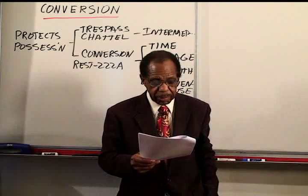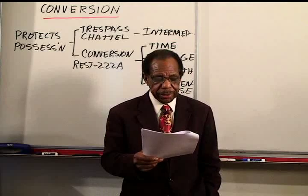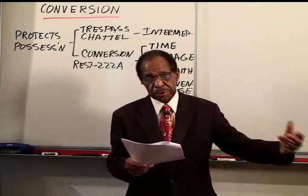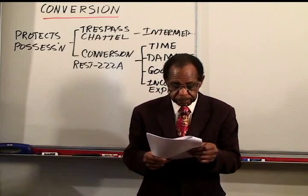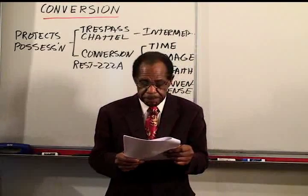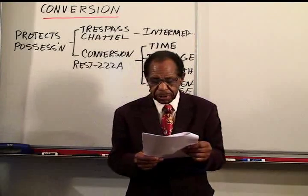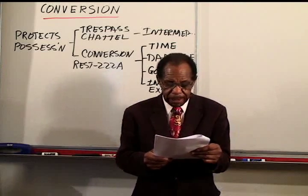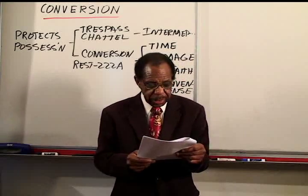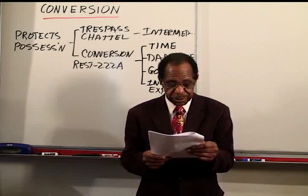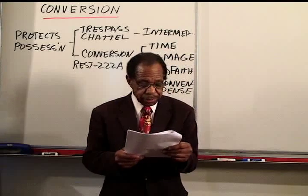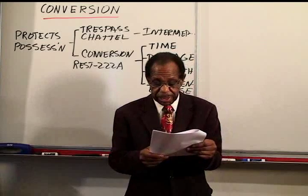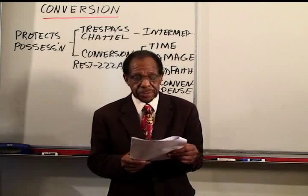Illustration 9: A ships goods using B as the carrier, and A shipped the goods to himself. By mistake, B delivers the goods to C. B discovers the mistake immediately and within 24 hours recovers the goods from C and delivers them to A. This is not a conversion. Illustration 10: Same facts except the goods are not recovered and remain in C's possession. This is a conversion.